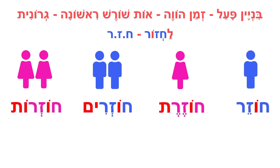Now we've found out how to conjugate those verbs. In the present tense, nothing changed besides the infinitive so far. The only thing that changes when the first root letter is a guttural letter is the infinitive. In the past and in the present tense — we're not talking about the future tense yet — in the conjugation, nothing will change. So far, so good.